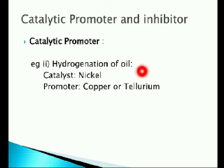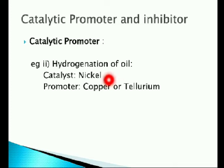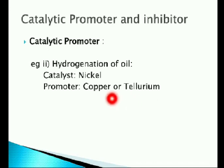Another example of a catalytic promoter is hydrogenation of oil. Vanaspati ghee or dalda is manufactured by hydrogenation of vegetable oil in the presence of nickel as the catalyst. To increase the activity of nickel, copper or tellurium is added in small quantity as the catalytic promoter.